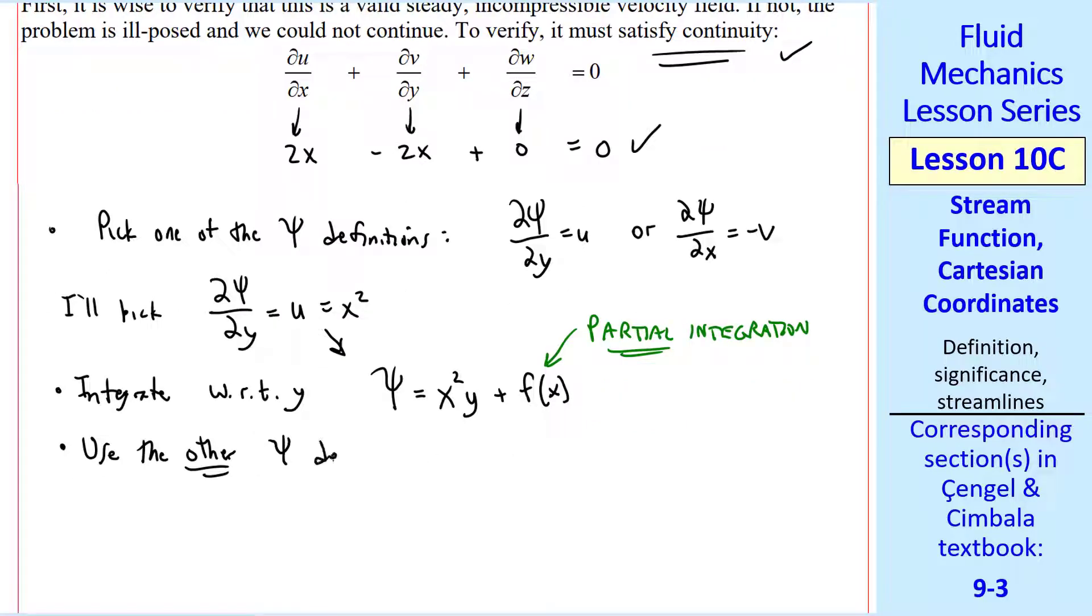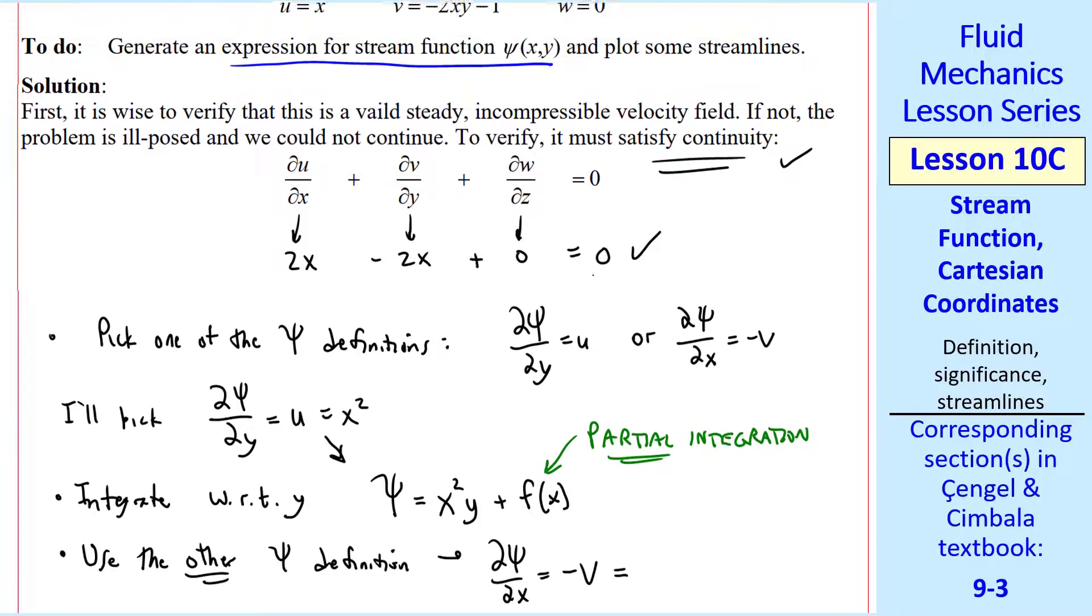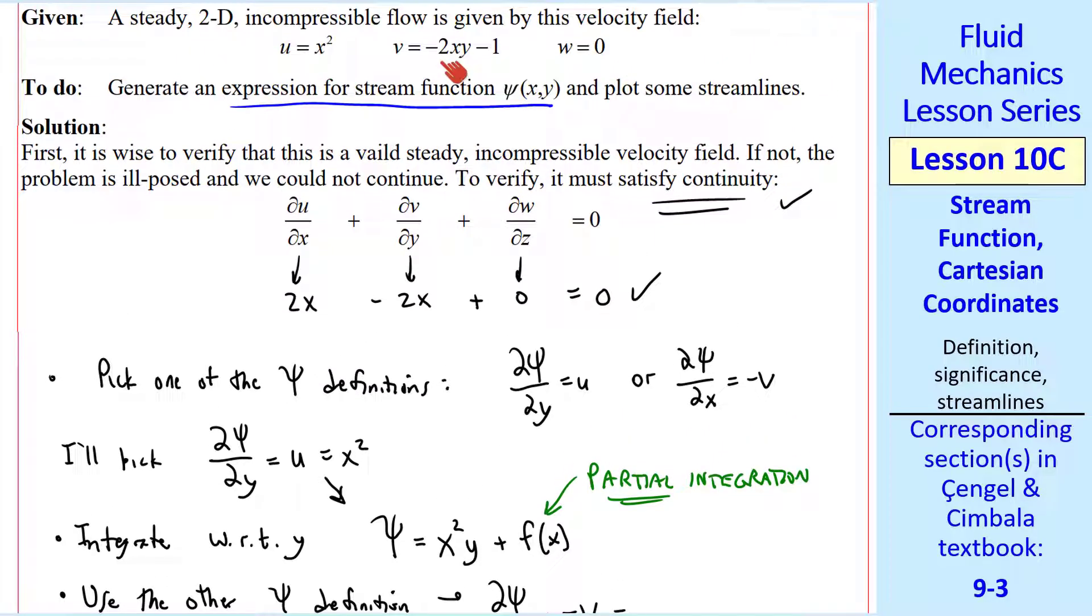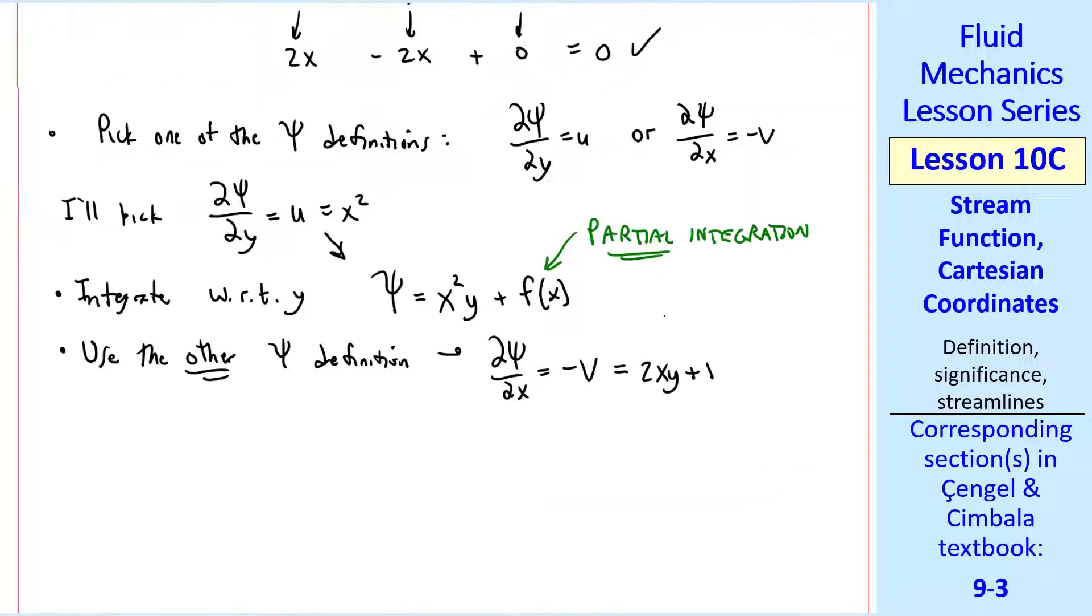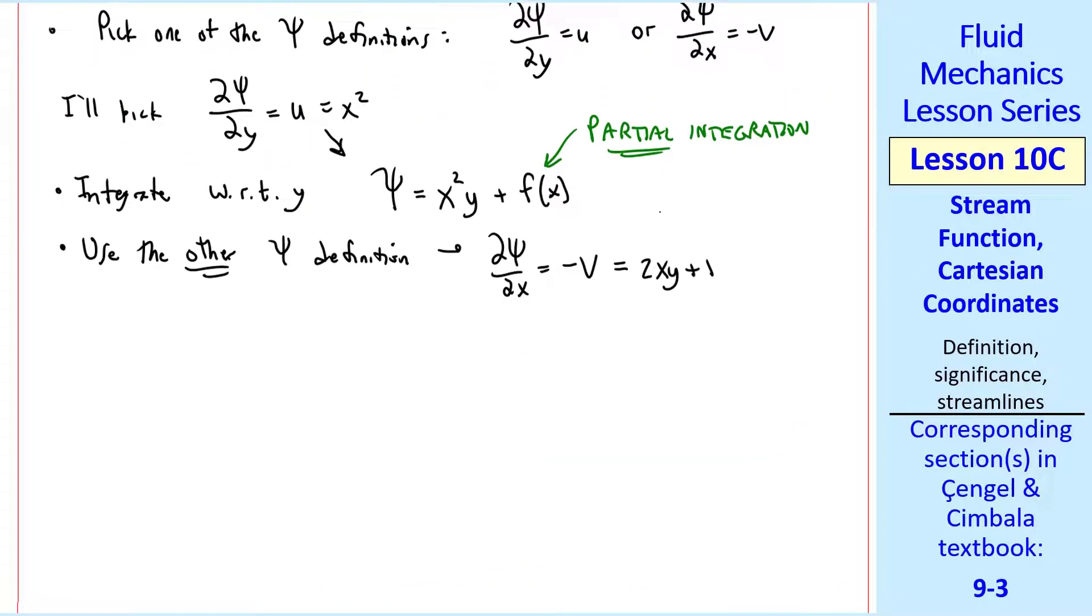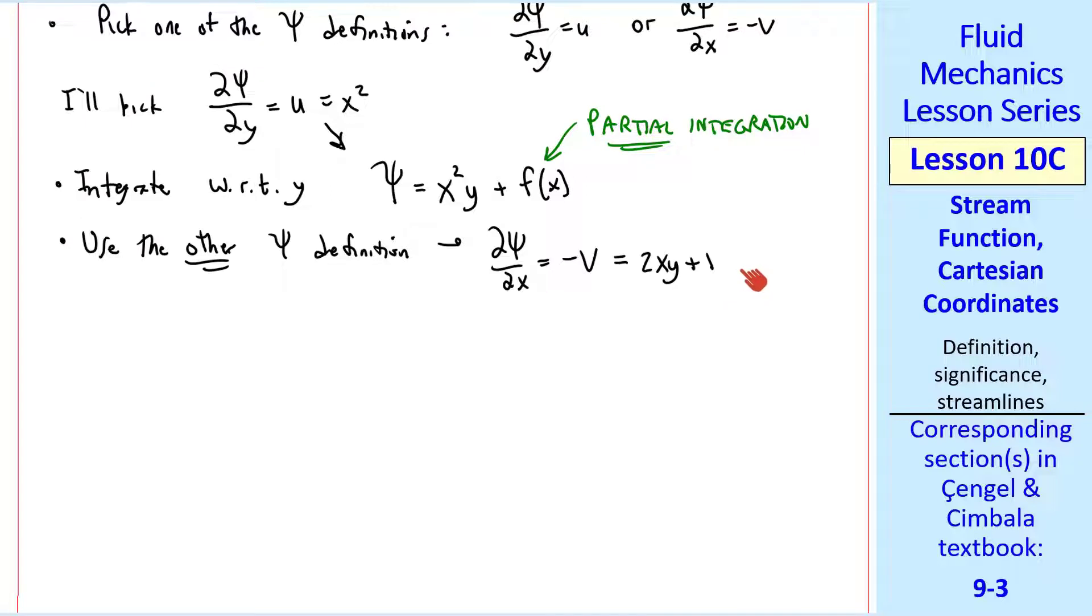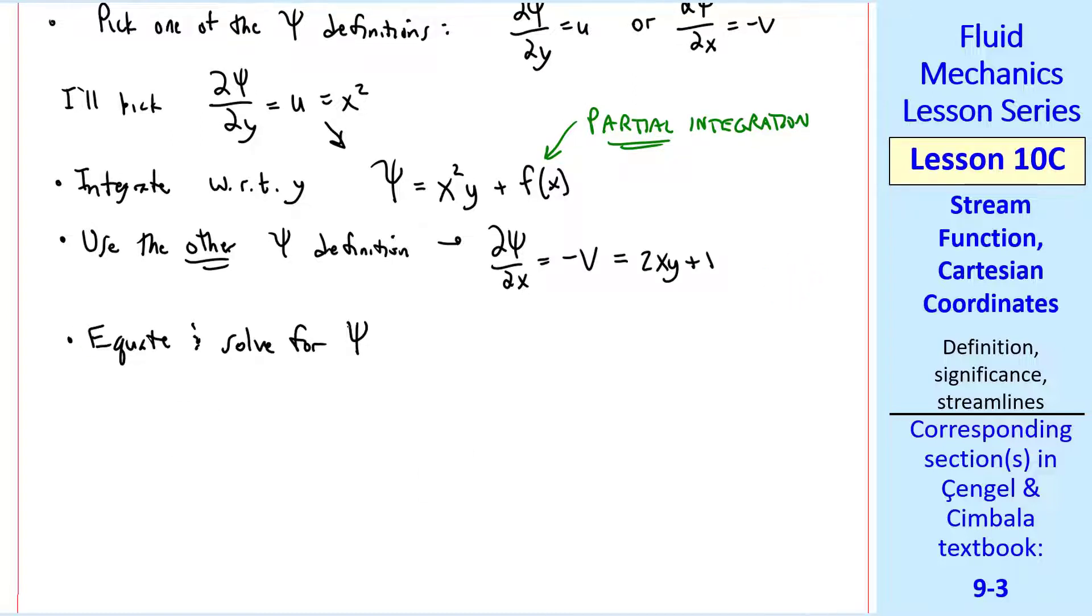Now I use the other psi definition, the one that we didn't use in our first step, which would be this one, del psi del x equal minus v and from our given information, that would be 2xy plus 1. Here's where students often go astray. They're tempted to integrate this and then you have an equation for psi with some function of y from your integration and then you get kind of stuck. But a better way is to equate and solve for psi.